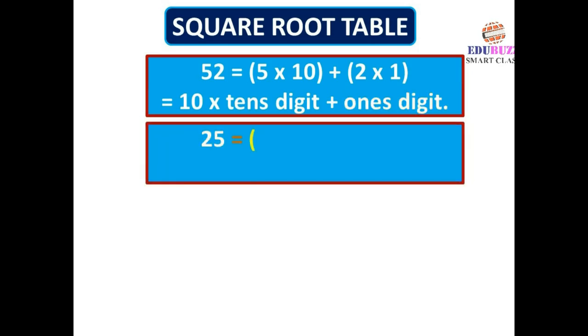25 is equal to 2 times 10 plus 5 times 1, which equals 10 times the tens digit plus the ones digit.